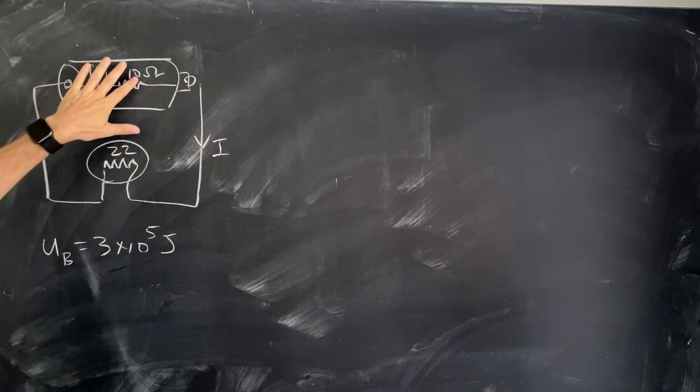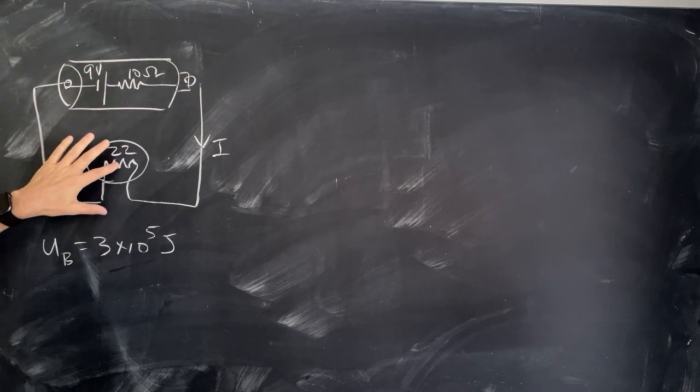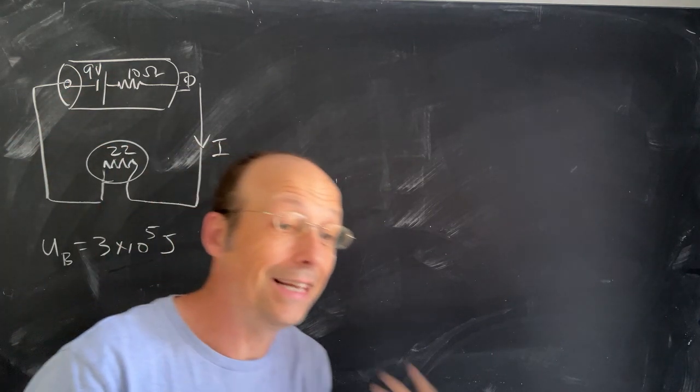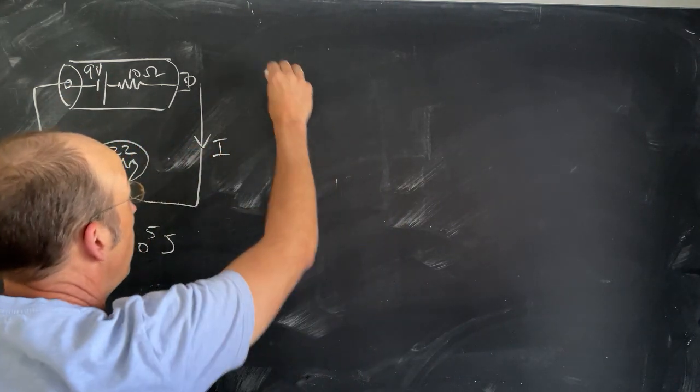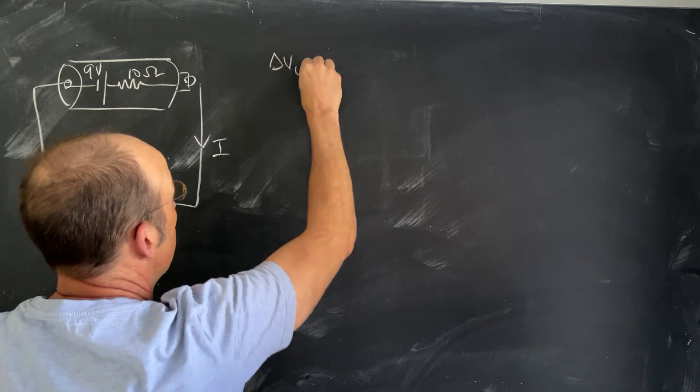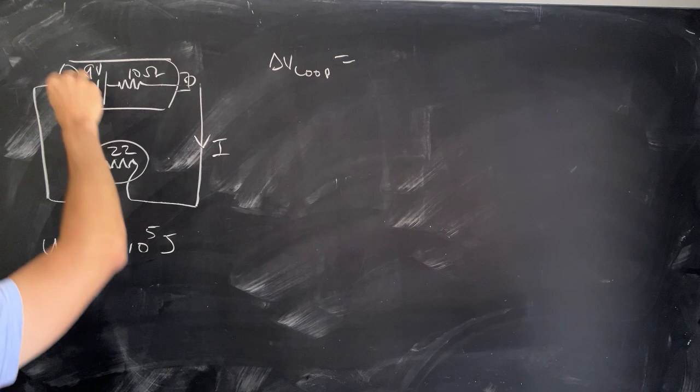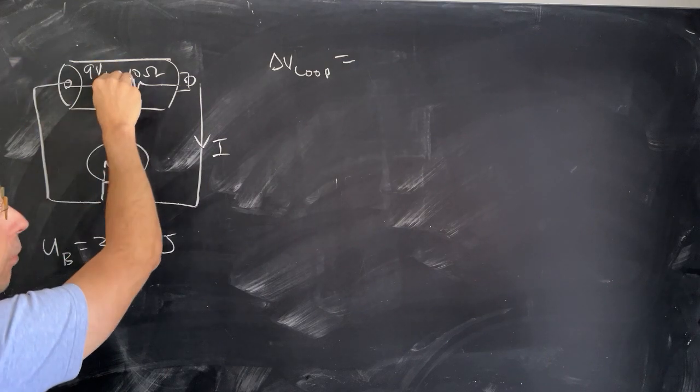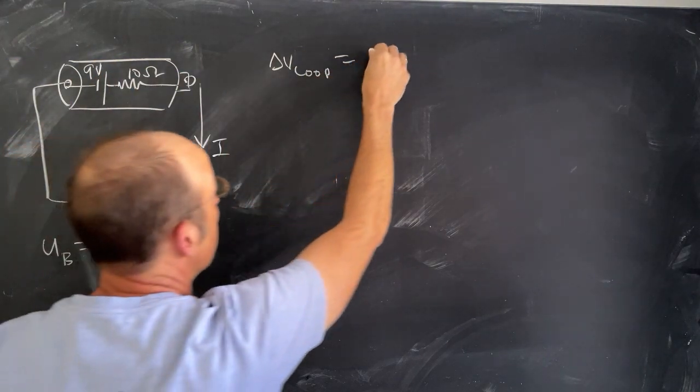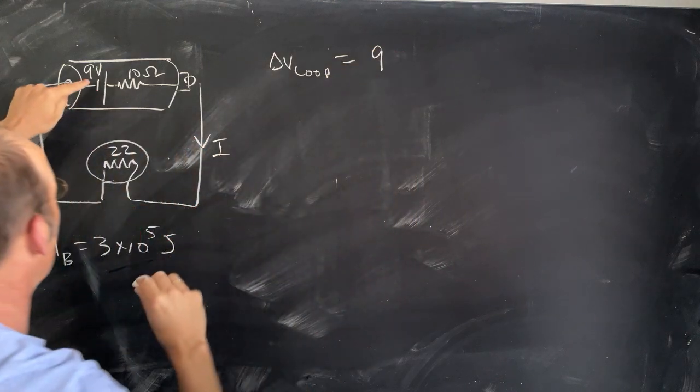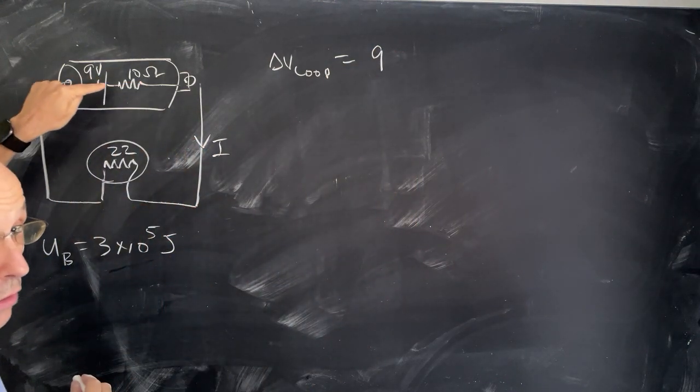I have a 9-volt battery with a 10-ohm resistor in series with a 22-ohm resistor in series, essentially. So I can use the loop rule, delta V. I can go around the loop and add up all the voltages. Let's start from here, go across the 9-volt battery, it's 9 volts.